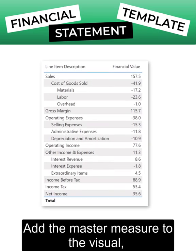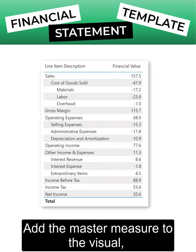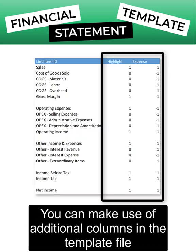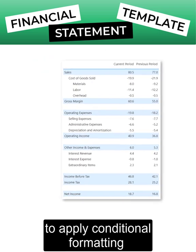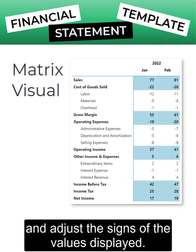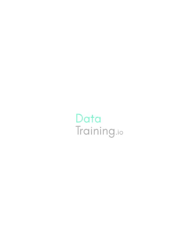Add the master measure to the visual, adjust the formatting, and show items with no data. You can make use of additional columns in the template file to apply conditional formatting and adjust the signs of the values displayed.